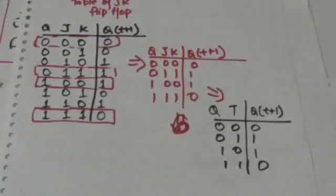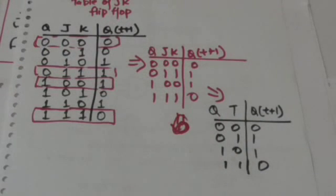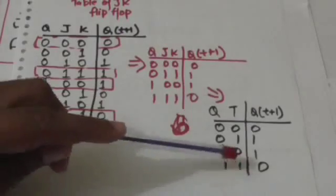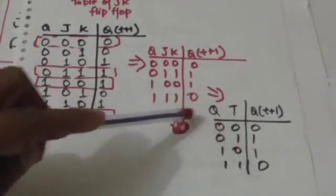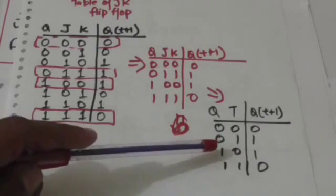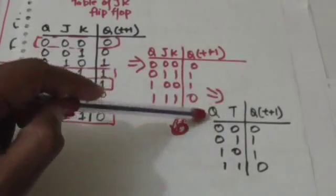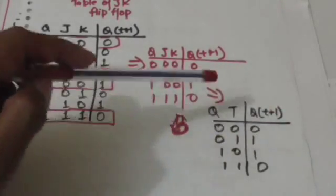Now we replace the two columns J and K by a single column T, having two values the same as J and K in the corresponding rows. The table obtained after replacing columns J and K by a single column T is the characteristic table of the T flip-flop. Here Q is the present state of the flip-flop and Q(t+1) is the next state of the flip-flop.